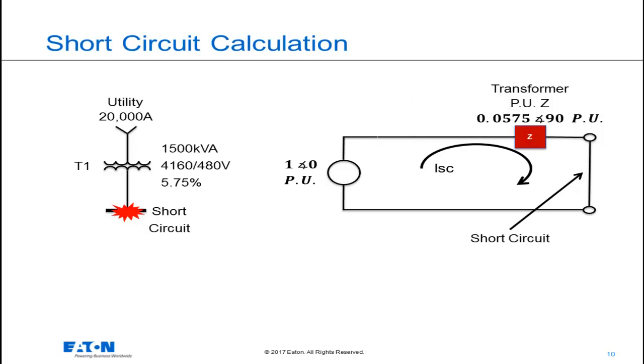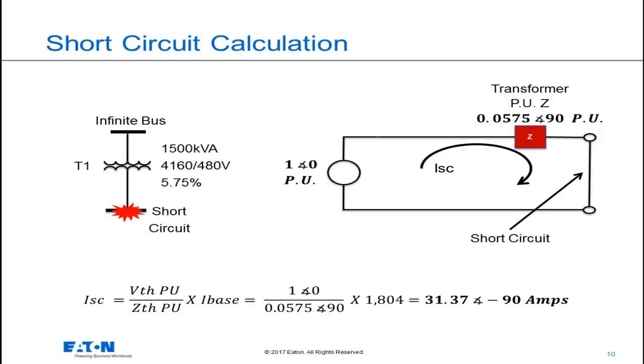Now we're going to consider an infinite bus. So I'm going to replace the utility 20,000 amps with an infinite bus because the fault current is infinite, but the impedance disappears from this circuit because it went to 0, just like our bolted three-phase fault.